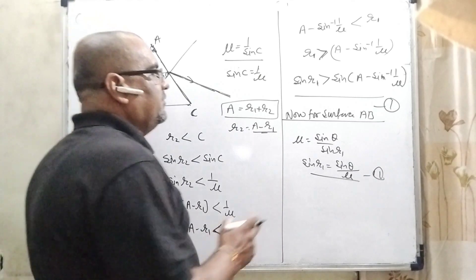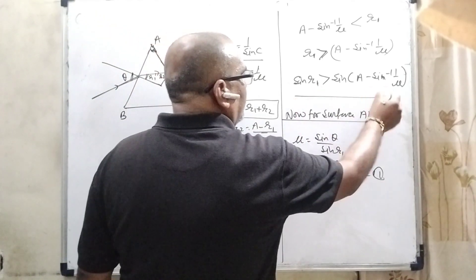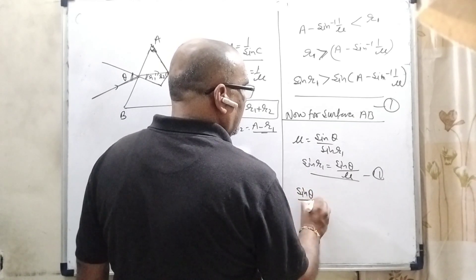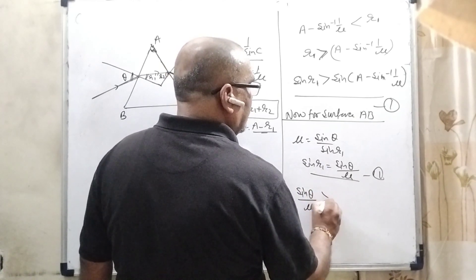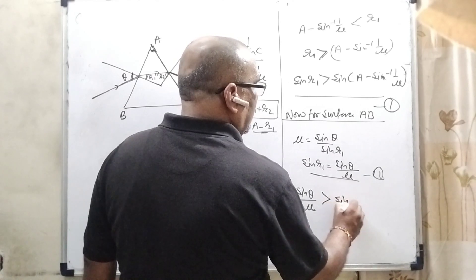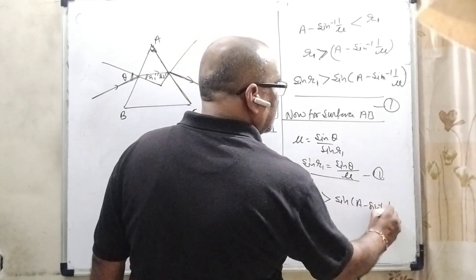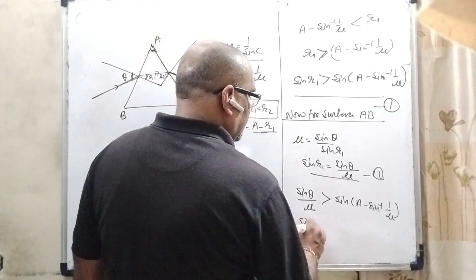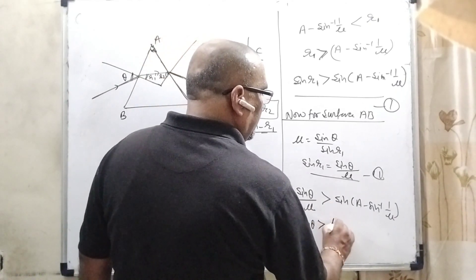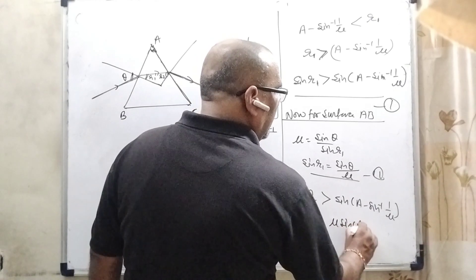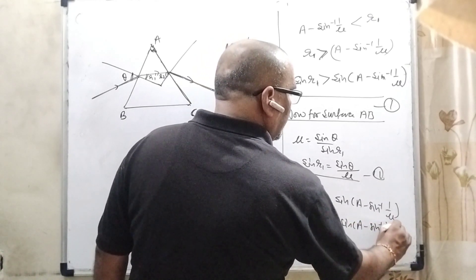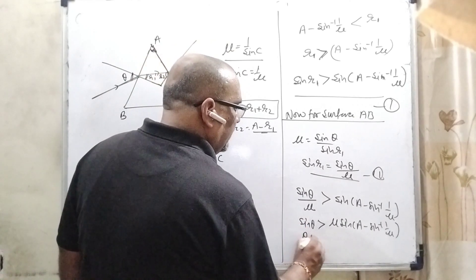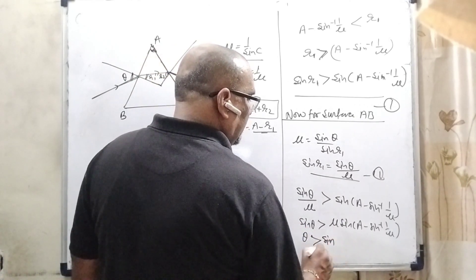Now substitute this value in equation first. So in the place of sin R1, it can be written as sin theta upon mu is greater than sin A minus sin inverse 1 by mu. This mu is transposing to the right side become mu sin A minus sin inverse 1 by mu.